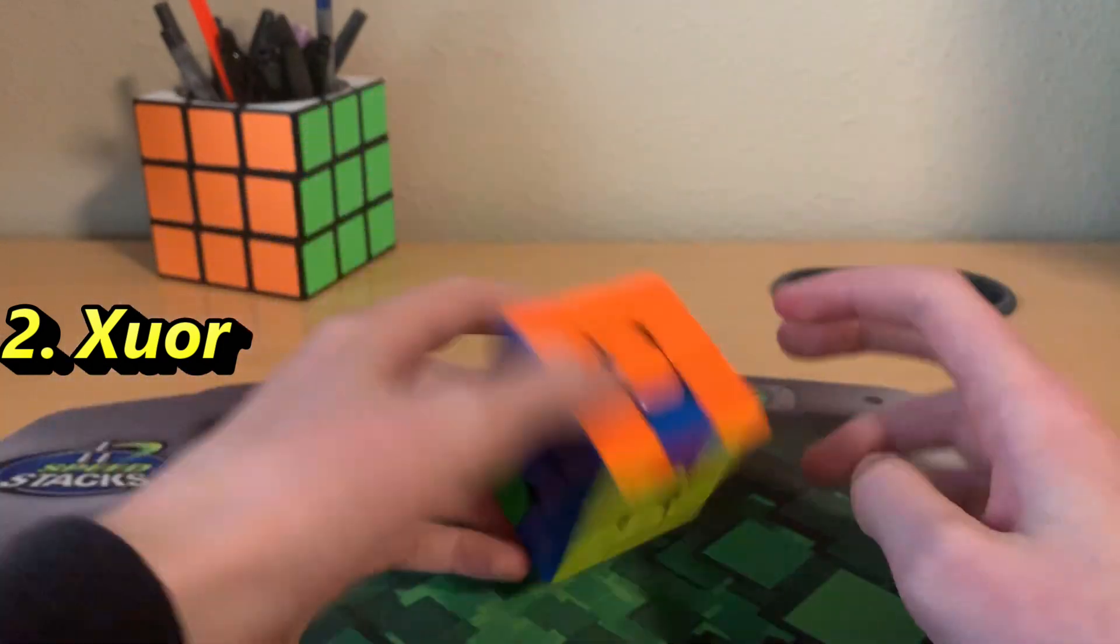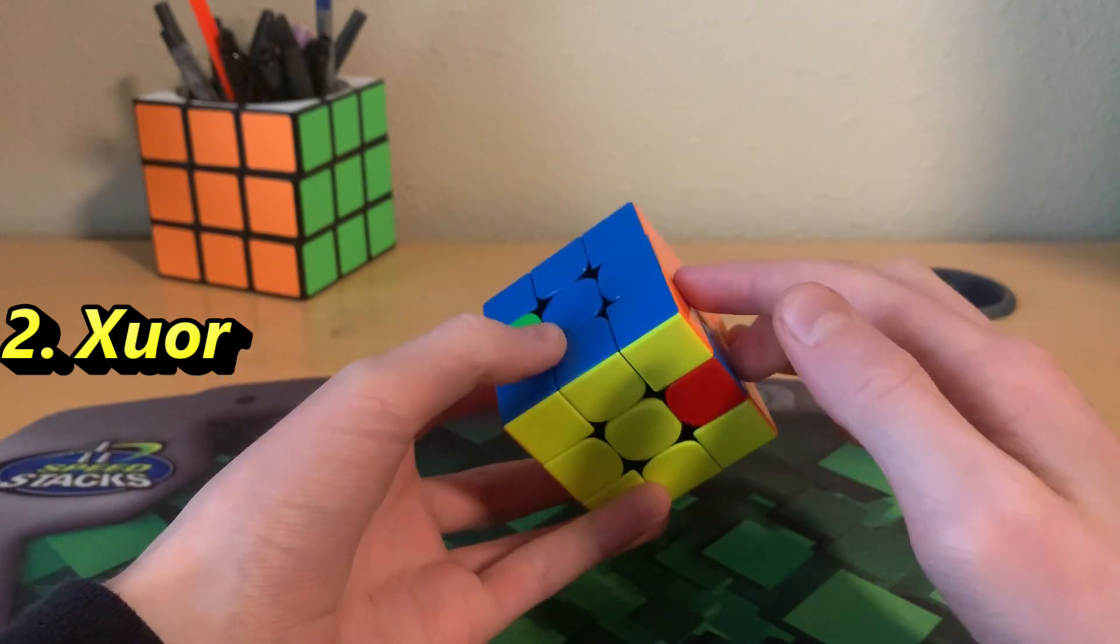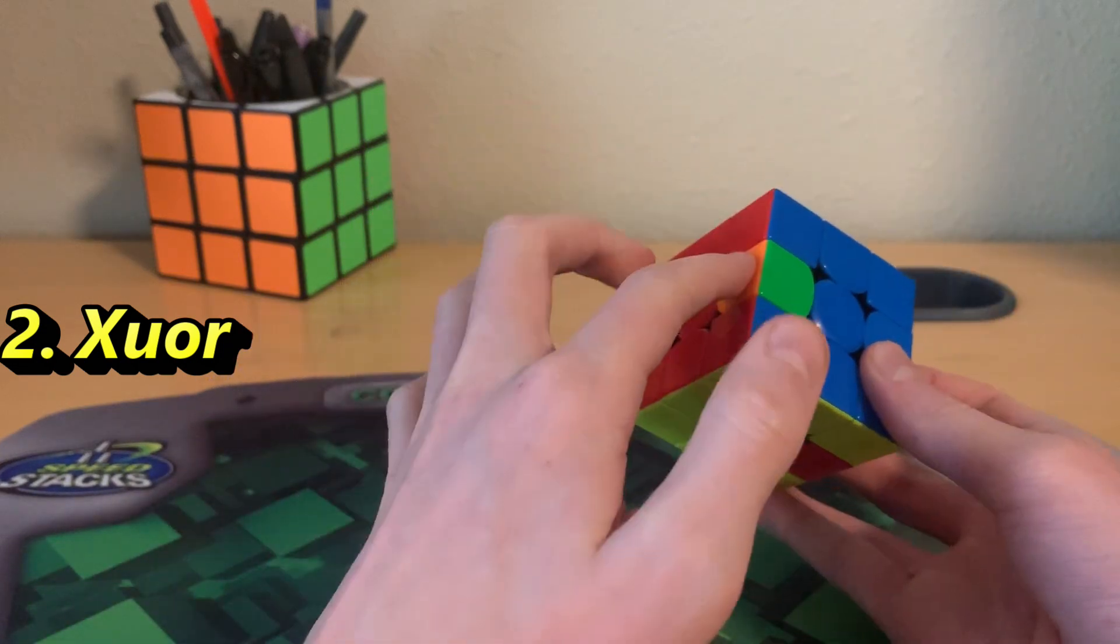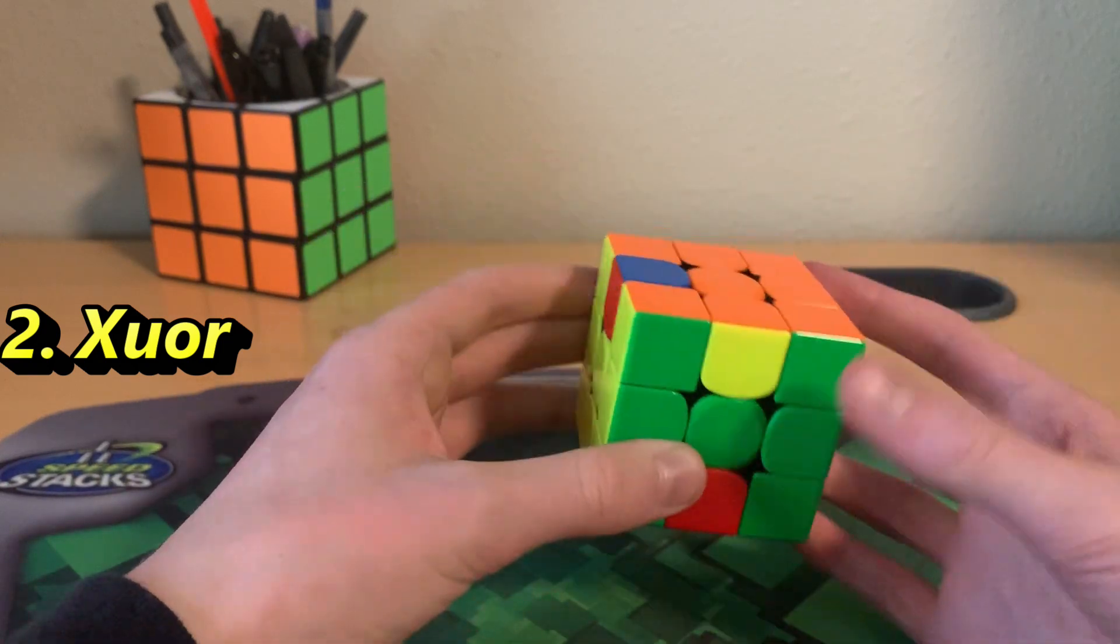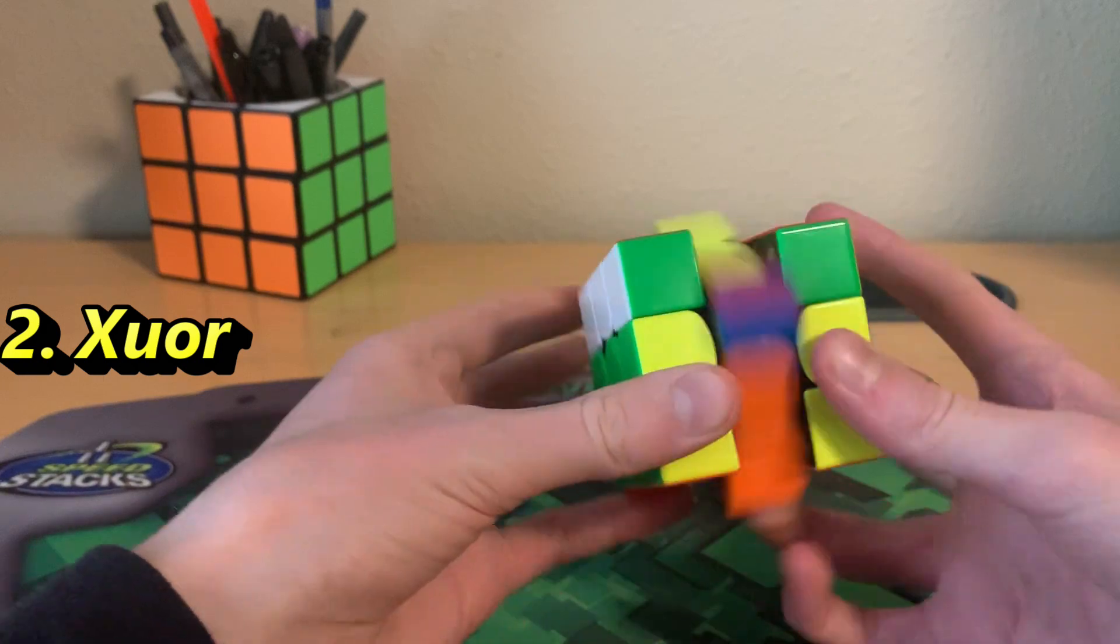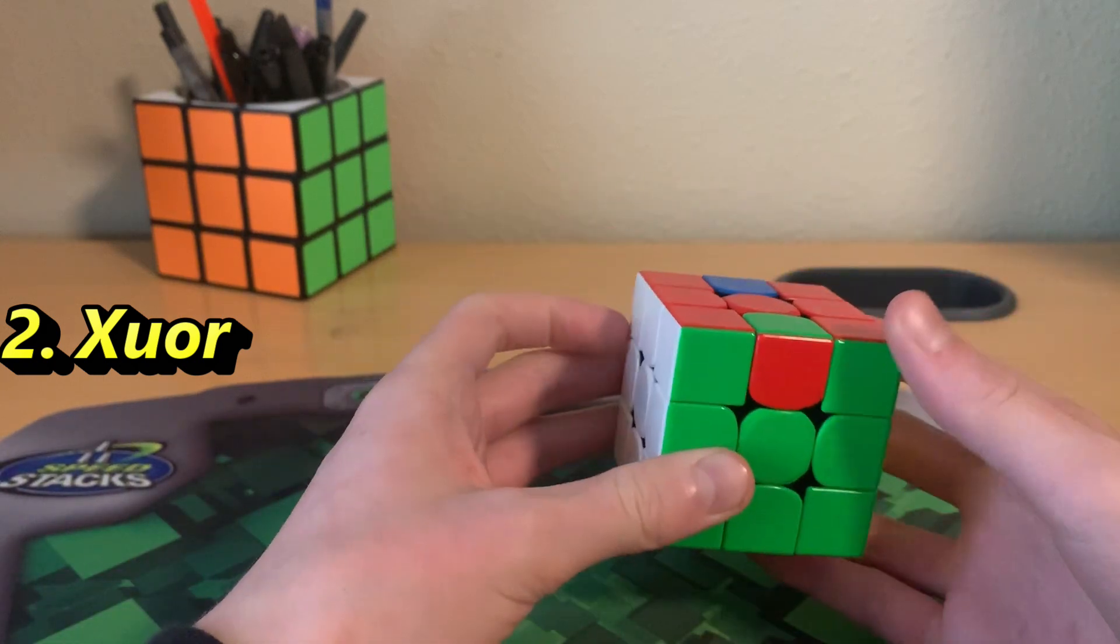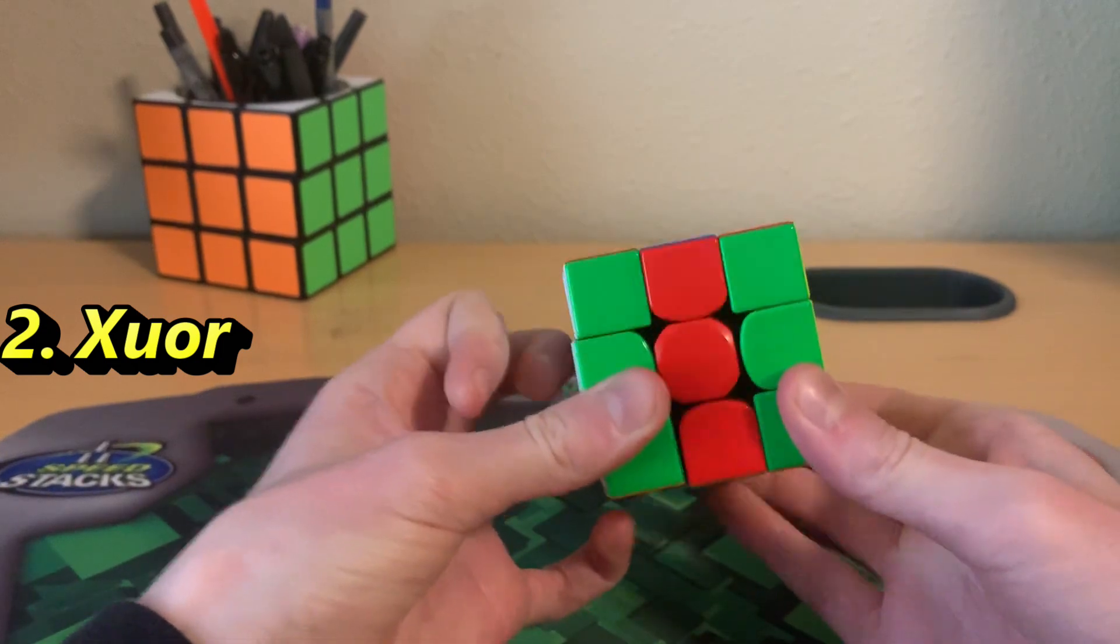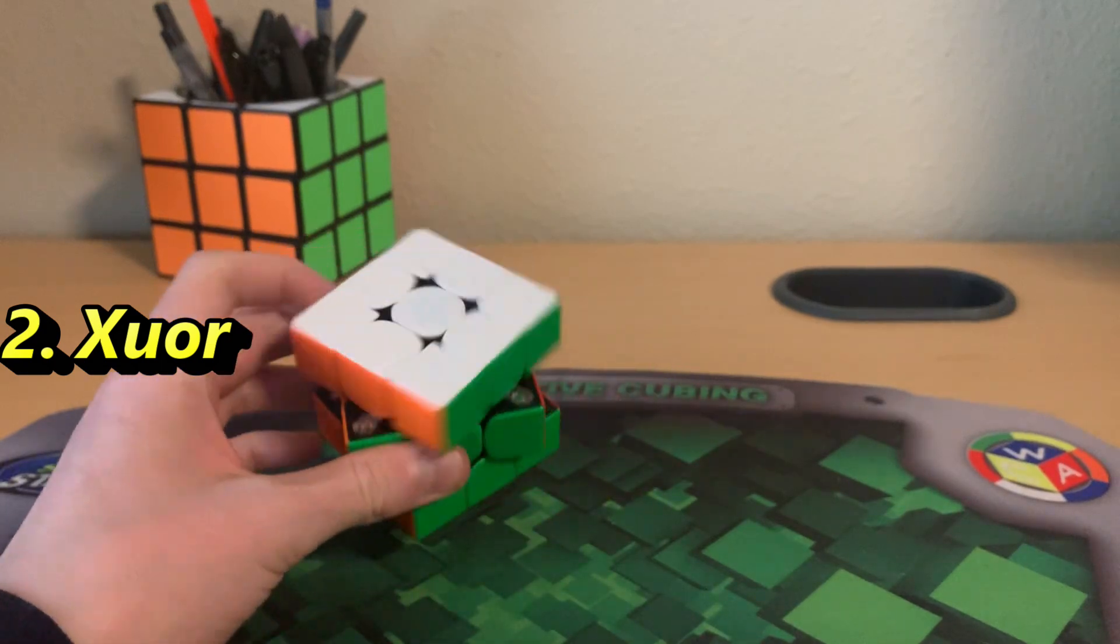So we've solved CMLL and LSE. And now we just have the three edges of second block and the three edges of first block. And you can do this in two commutators if you're good at commutators. I am not that good at commutators. So sometimes it takes me more. And then we actually have to flip these two. And that's XUOR method, reverse RU.